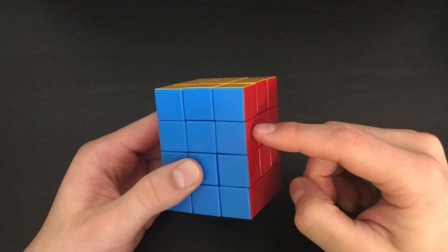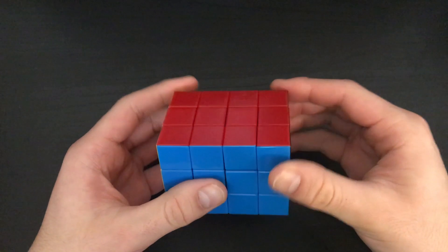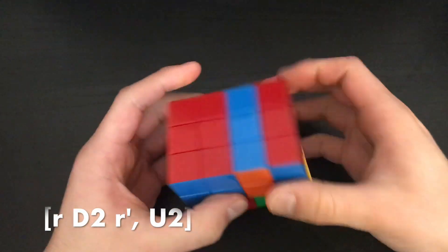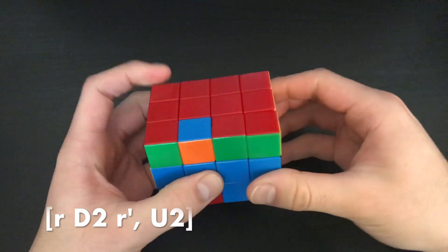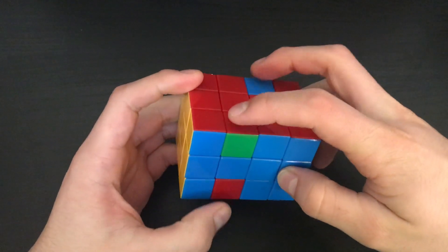For wings, I use the buffer RFU, and I cycle pieces using commutators like this. Little r, D2, little r' U2, little r, D2, little r' U2, which cycles these three.